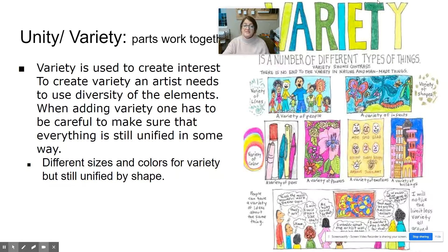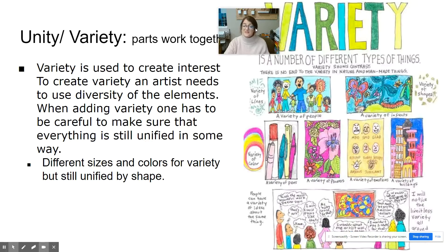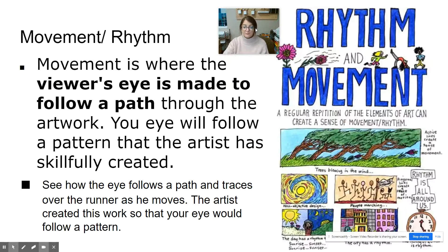You can have different sizes and different colors, but you still want that unified look. For example, a variety of people still looks unified because they are all in the same style. A variety of insects can complete your artwork but they all look like they go together. The key is that all parts are working together. Unity creates a feeling of completeness, while variety makes it more interesting.